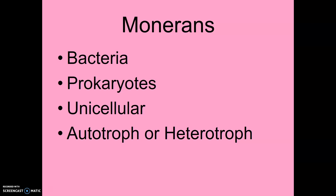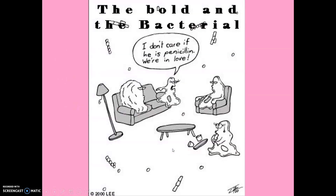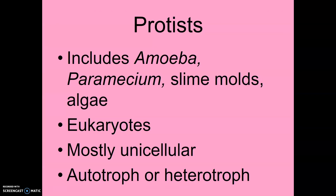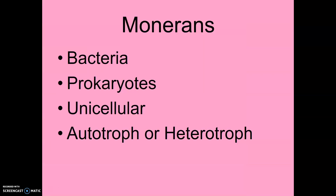Let's start with monerans. These are bacteria. They're prokaryotic — remember, 'pro' means no nucleus, so bacteria do not have a nucleus. They're unicellular, only one cell. These can be either autotrophic, meaning they make their food, or they must obtain nutrients from other organisms. Also important: this is the only kingdom that is prokaryotic, which helps you separate it from the rest — all the others are going to be eukaryotic.